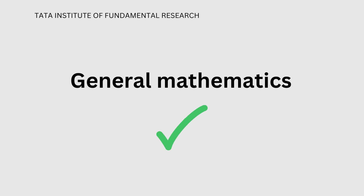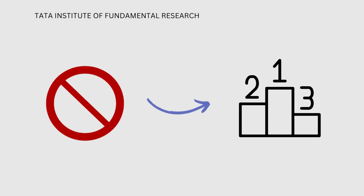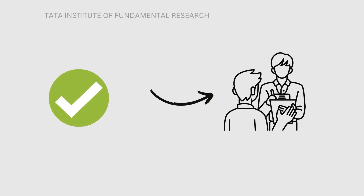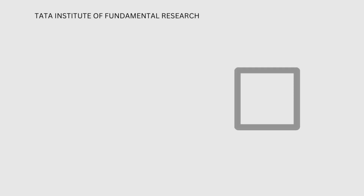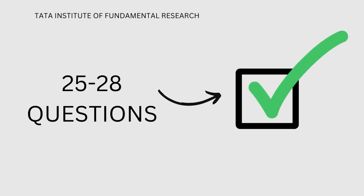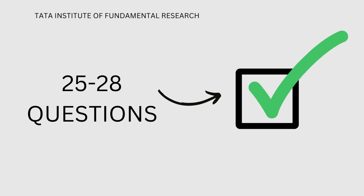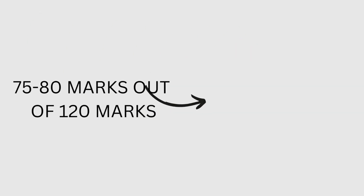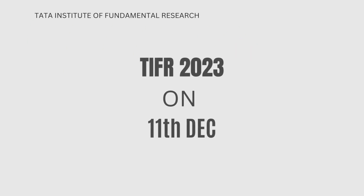There is no ranking system in this exam — you only need to qualify and you will get called for the interview. For qualification you have to answer at least 25 to 28 questions correctly out of 40 questions, which means you have to get on average 75 to 80 marks out of 120 marks. So this is all about the paper style of the TIFR exam.